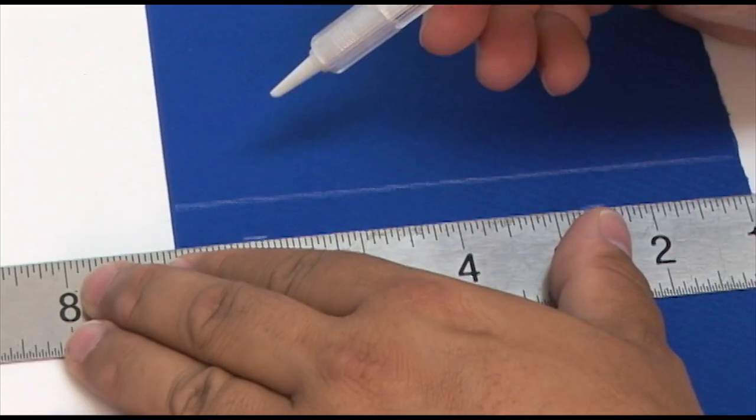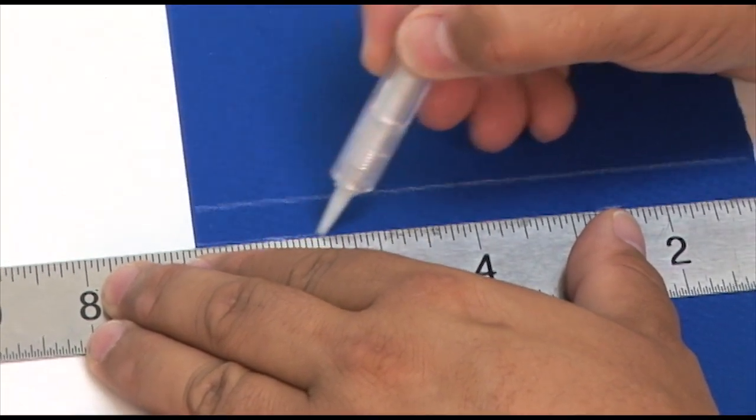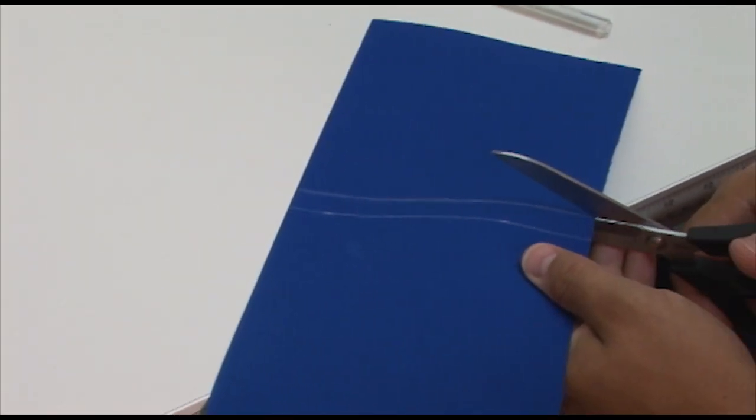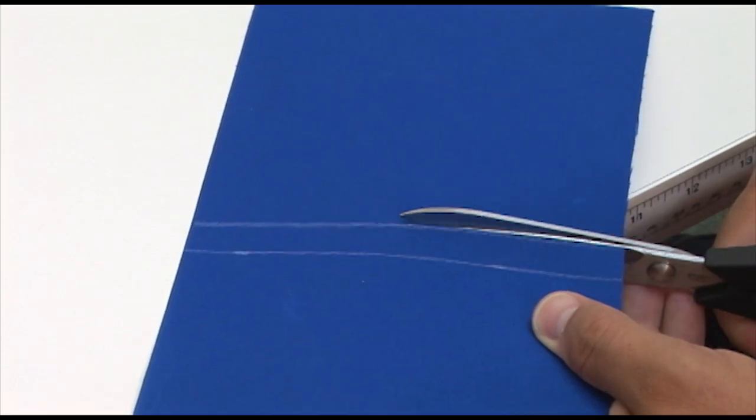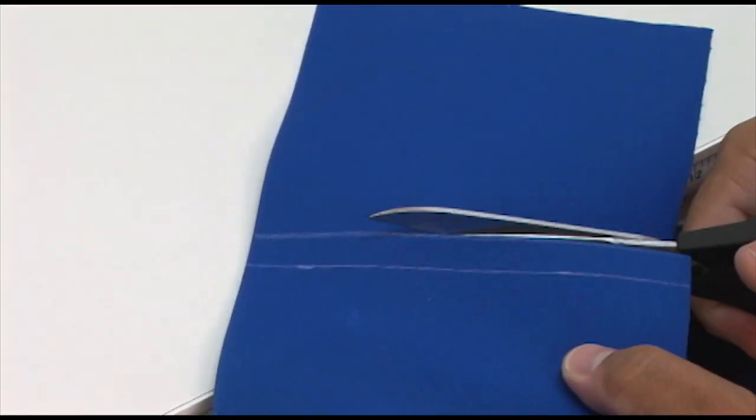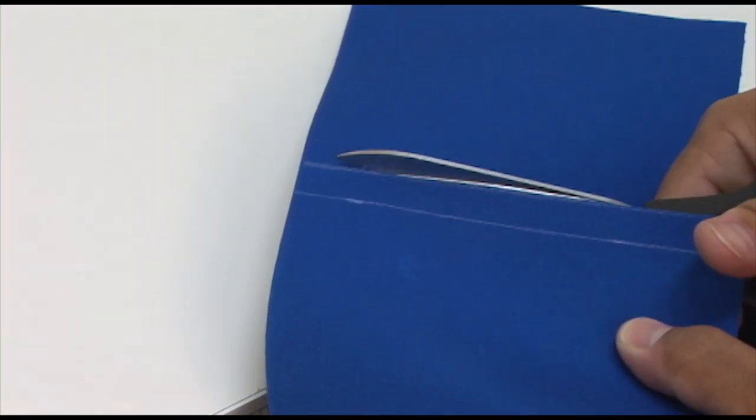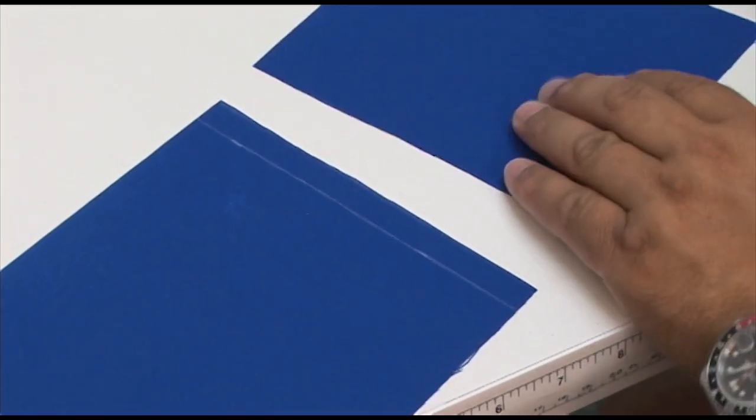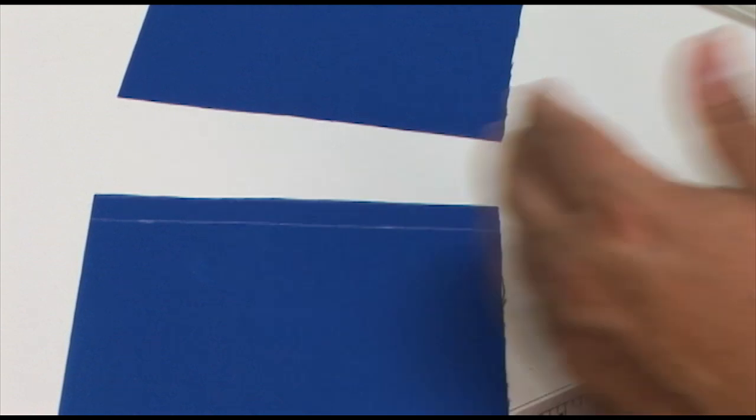The nice thing about these soapstone pencils is that these markings will come off with just water over time and you don't need to worry about trying to remove them when you're done. Now Sunbrella really shouldn't be scissor cut. Sunbrella should be cut with a hot knife in order to seal the edges to keep it from raveling, but for the purposes of this video we're just using scissors.